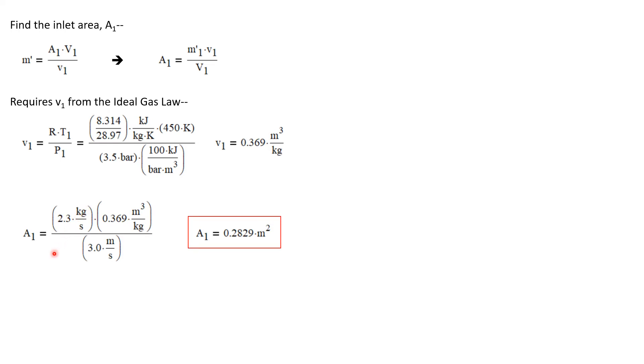Now I'm going to calculate the area. It's the mass flow rate, 2.3 kilograms per second, times the specific volume, 0.369 cubic meters per kilogram, divided by the velocity at the inlet state, 3.0 meters per second. That gives us an inlet area of 0.2829 square meters.